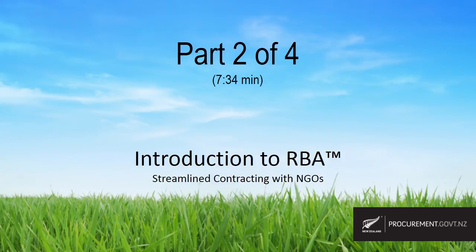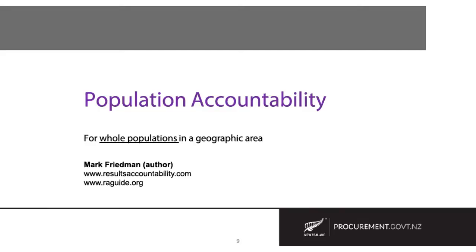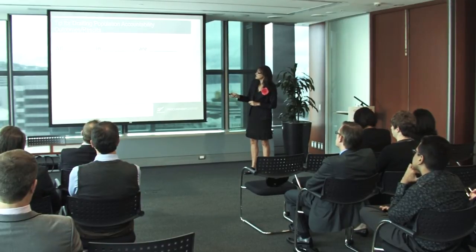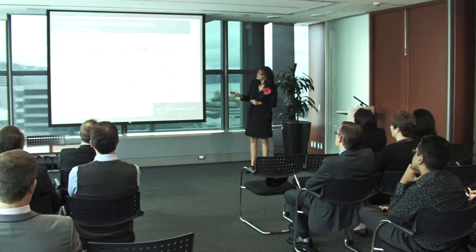Let's have a look at population accountability in a little bit more detail. Remember that population accountability is for whole populations in a geographic area. After this one-hour intro, you'll want to run out and facilitate the development of population results or outcomes for a population in a geographic area. Here's a little tip for drafting population outcomes or results: basically what you do is you put 'all blank and blank are' on the board and then simply insert different terms.